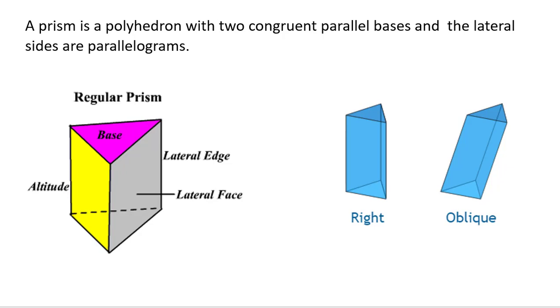A prism is a polyhedron with two congruent parallel bases and the lateral sides are parallelograms. You have the base that's going to be some sort of polygon—triangle, square, rectangle, pentagon, hexagon, octagon, something.